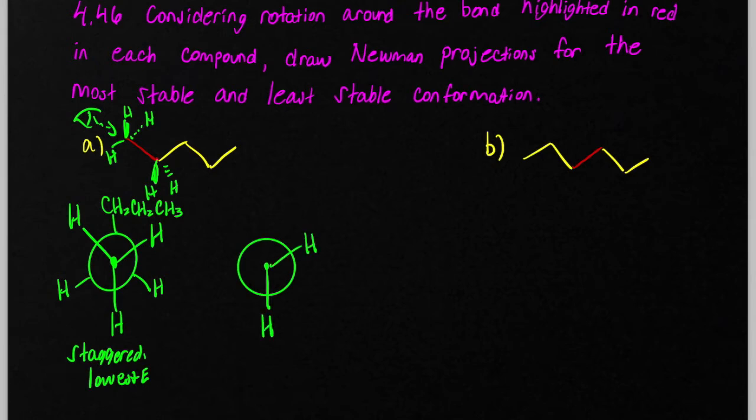I'm going to keep the front carbon steady, as I usually do. And I'm going to rotate the back carbon, the back groups clockwise just a little bit by 60 degrees. So my propyl group is going to end up here.